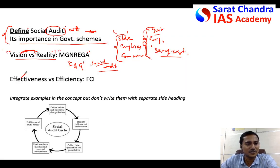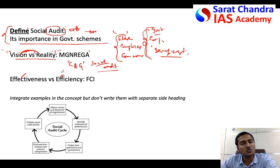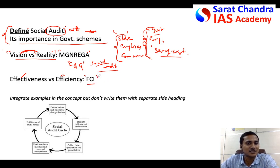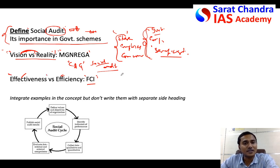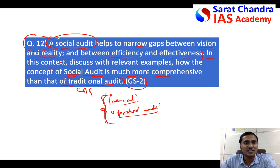The question also talks about the gap between efficiency and effectiveness. Effectiveness means the end result you produce is very good. Efficiency is different — it means producing a good end result while using minimum resources to produce maximum output. For example, the Food Corporation of India: its effectiveness is whether it can provide food grains at low cost to a large number of people, but in this process how much it is spending on transportation and leakages must be reduced. For that, social audit is essential for the FCI as well.